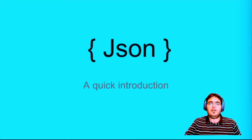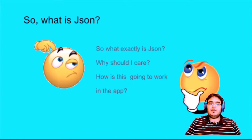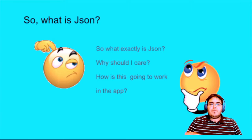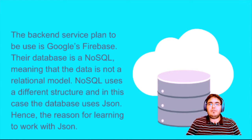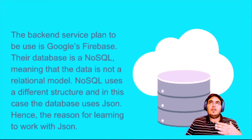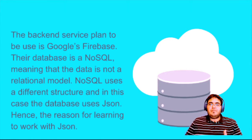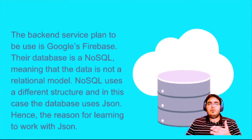This is going to be a really quick video — an introduction to JSON. You might be asking: what exactly is it and why are we going to use this in our apps? The reason is the cheapest backend service is provided by Google Firebase. Firebase is based on a NoSQL style, meaning the data is not a relational model — it doesn't store data like a regular SQL database, it doesn't have tables. The way they record it is in a JSON file, and that is why we're going to learn and use JSON in our app.